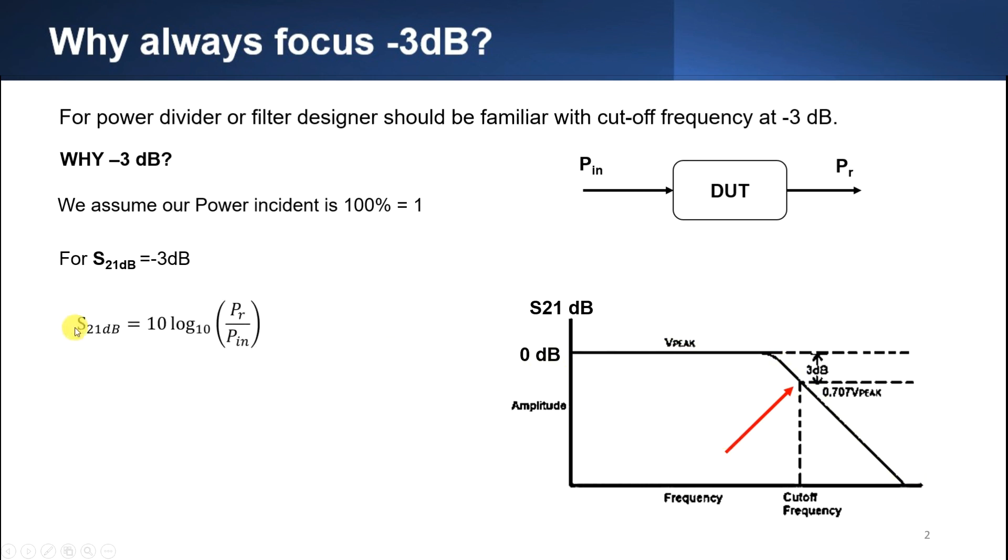So next, S21dB, the formula is equal to 10 log, power received, divided by power input and then the negative 3dB, equal to 10 log, power received, divided by power input.